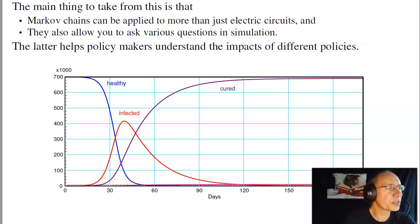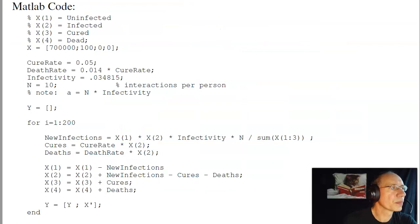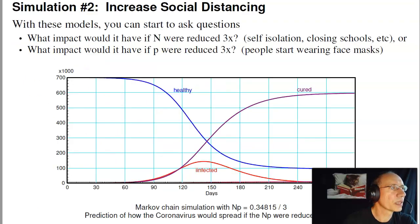So if this is what we get based upon the world that we knew back on March 1st, what would happen if I reduced n times p? Suppose I increase social distancing, so that instead of each person coming in contact with 10 people each day, I drop that by 3. And you can do that by self-isolating, closing schools, etc.